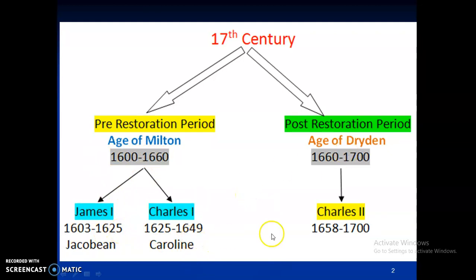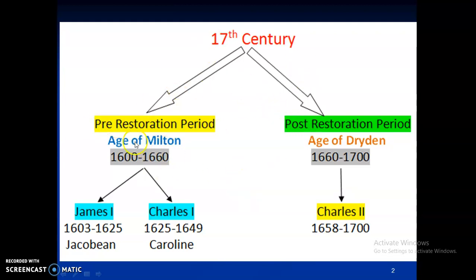Charles II — the son of Charles I — ruled England from 1658. He was in France and was invited back, becoming monarch and king of England in 1658. From 1660 onward till 1700 is known as the post-restoration period. This was a political timeline, because although two literary figures — two poets — have also been mentioned, this is essentially political history of England.